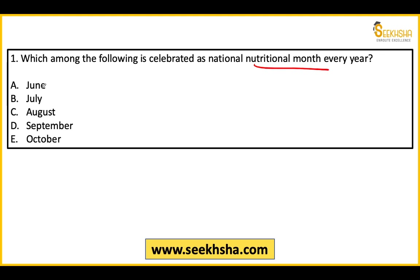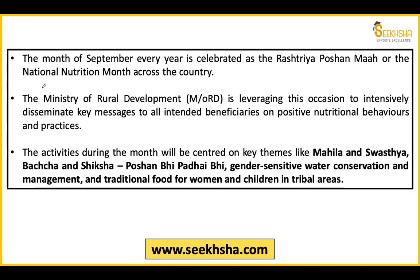The options are: June, July, August, September, October. It is a factual question. The right answer is Option D — September. September is the right answer.